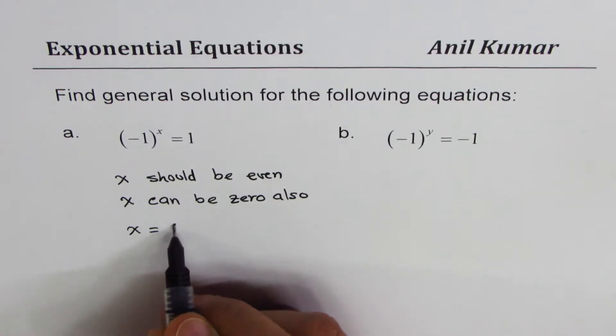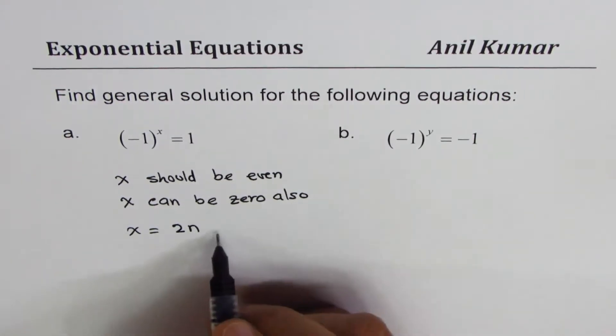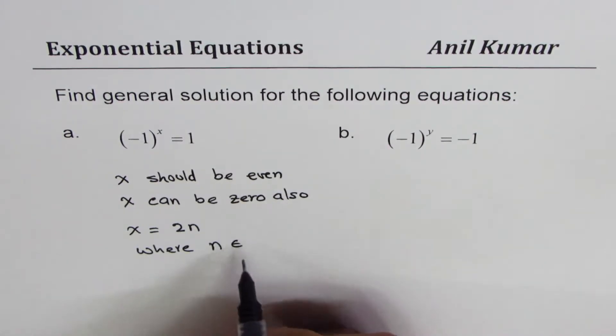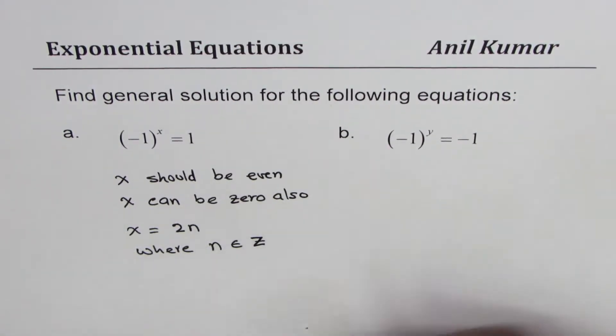x = 2n where n belongs to integers. Integers could be written as Z or I, where n belongs to integers.